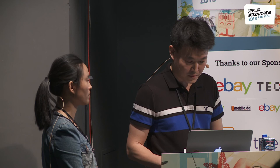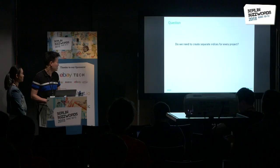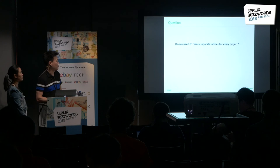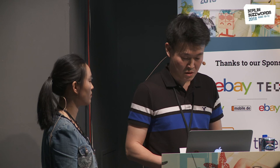The question is: to define a new design, do we need to create separate indices for every project? In that case, with 3,000 projects we would need to define 3,000 indices every day, meaning 3,000 shards per day are created. With two replicas that means 10,000 shards created every day — so it's not scalable.